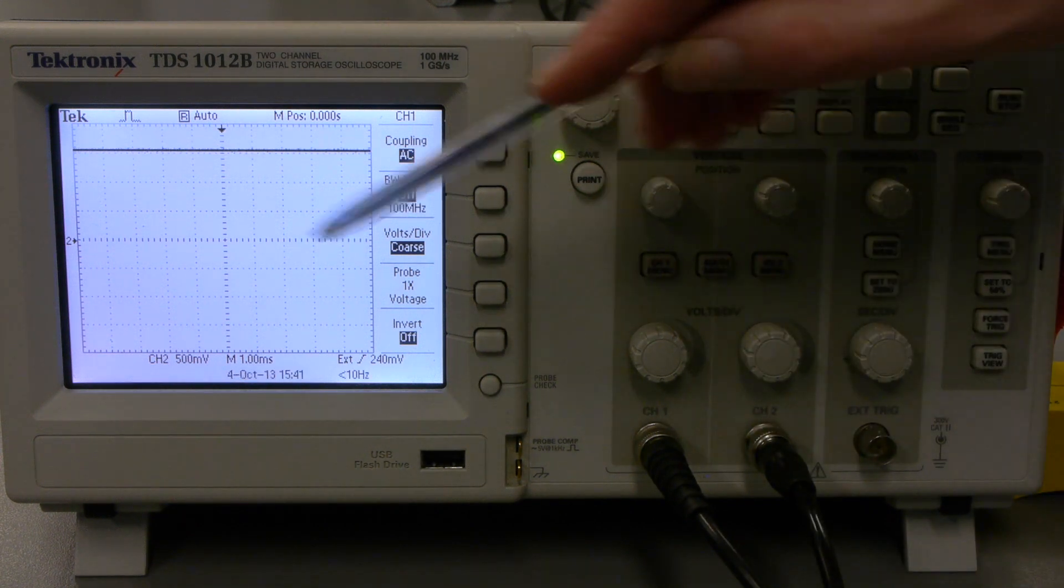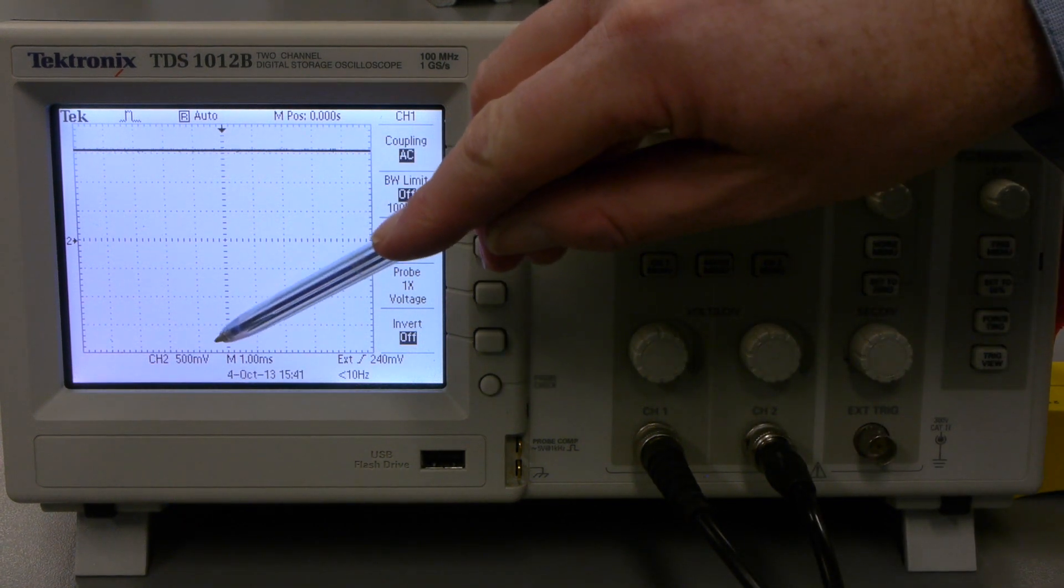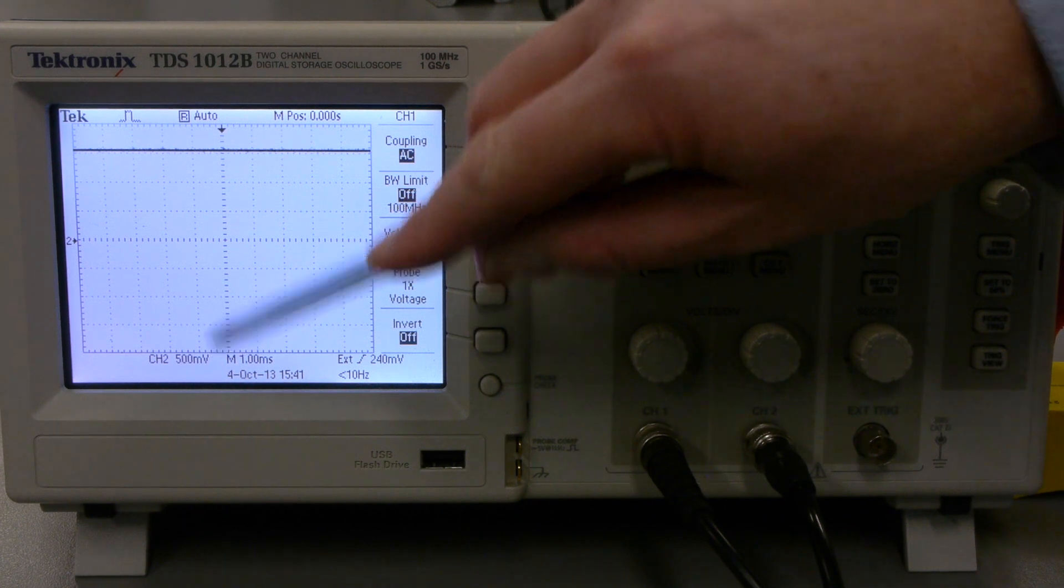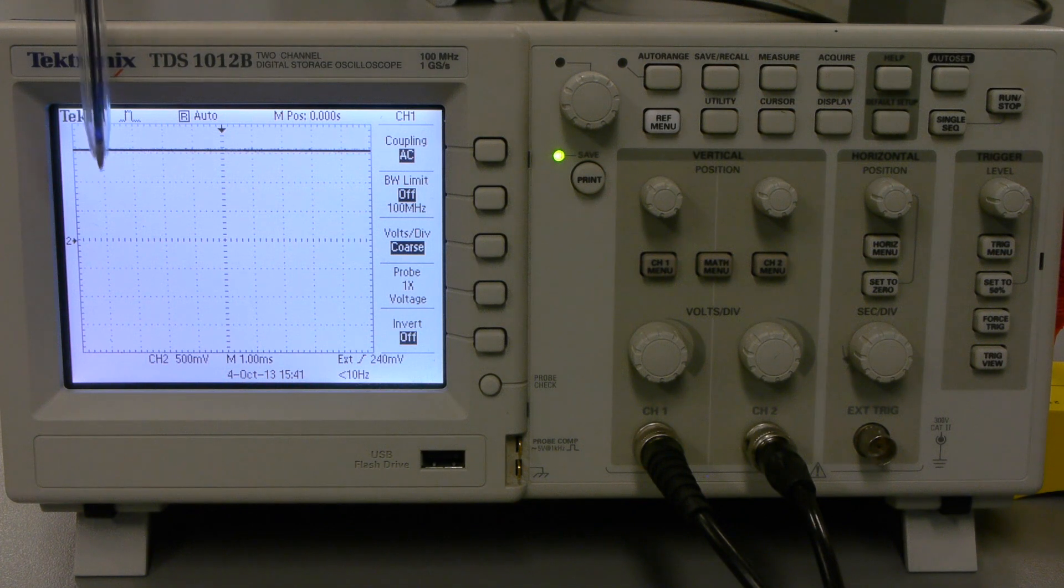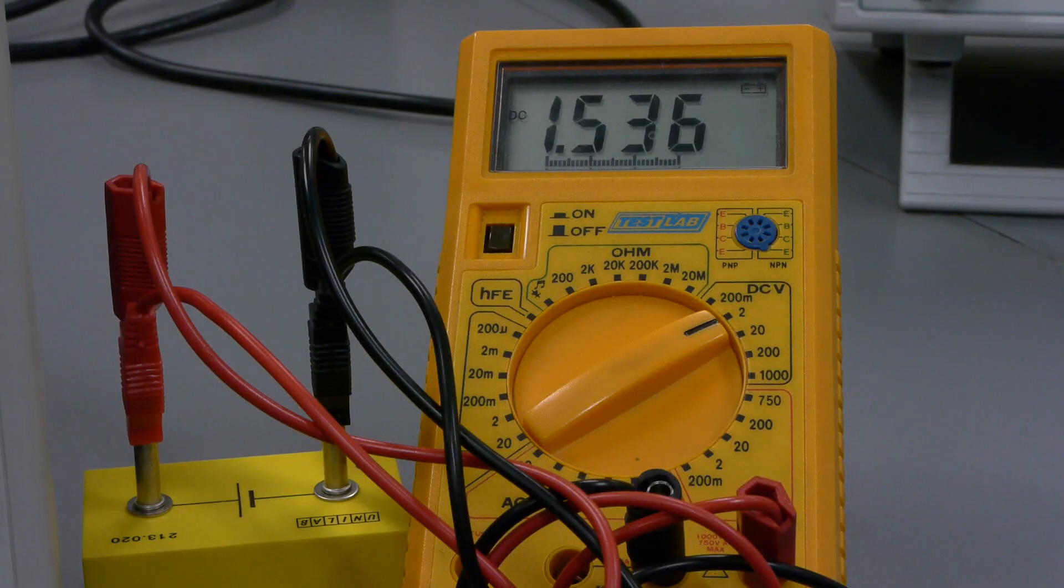Now, reading this number on the screen, it's 500 millivolts per individual box here. So now we have 1, 2, 3, which means it's 3 times 500 millivolts, which is 1.5 volts as our multimeter displays here on the screen.